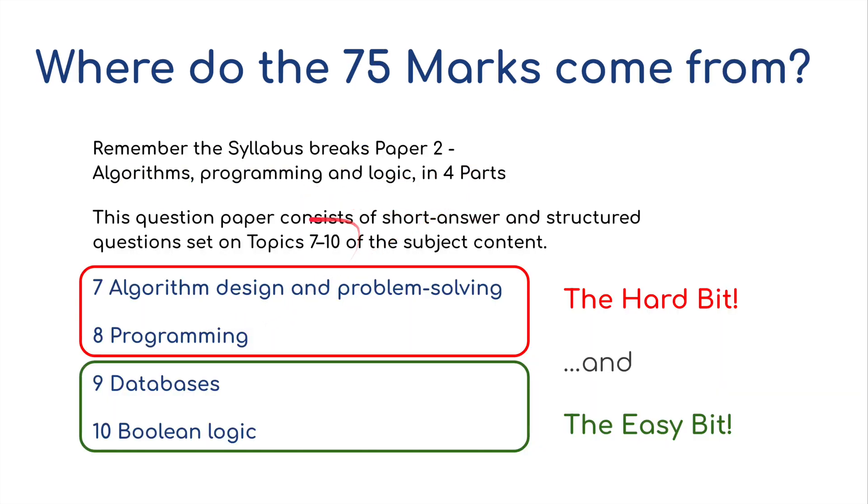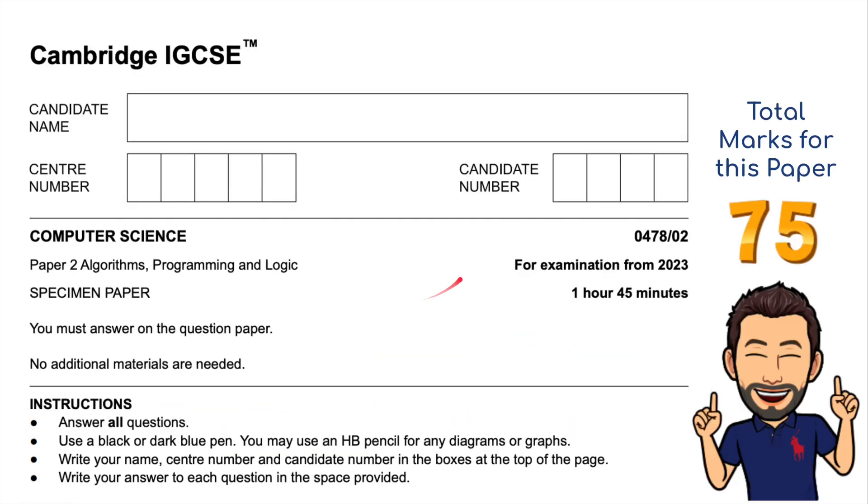Paper 2 does cover four of the topics: the hard bit, the algorithm design and problem solving, and programming, and then the easy bit, the databases and the Boolean logic. An hour and 45 minutes to get the 75 marks.